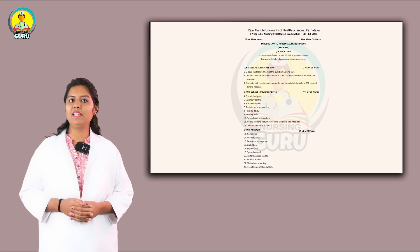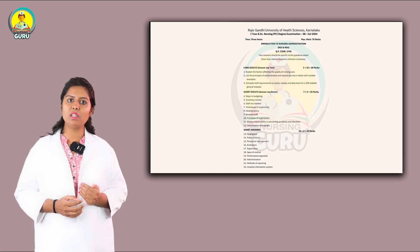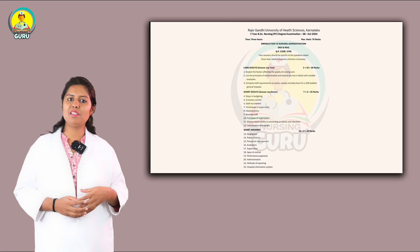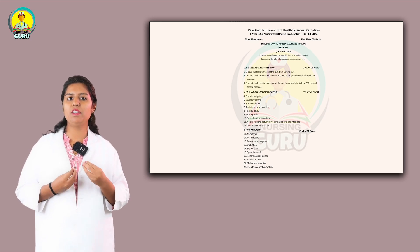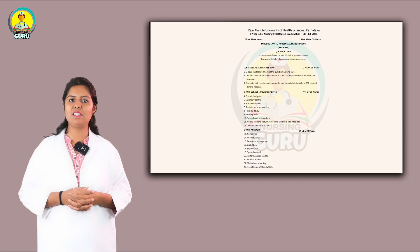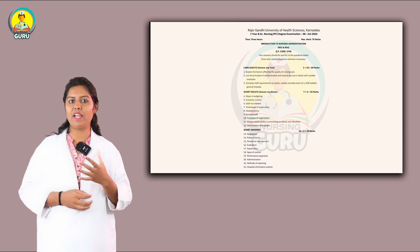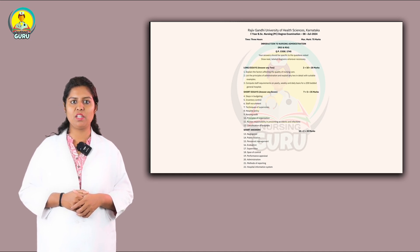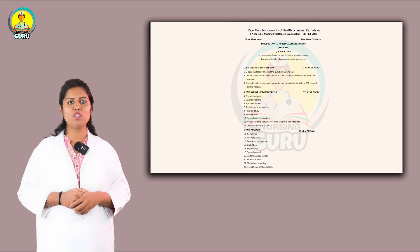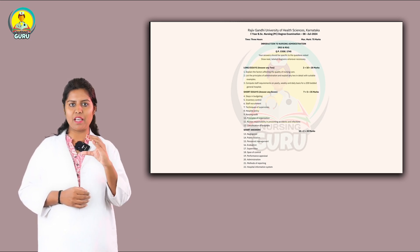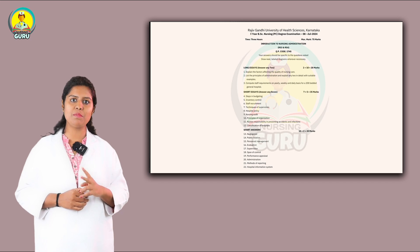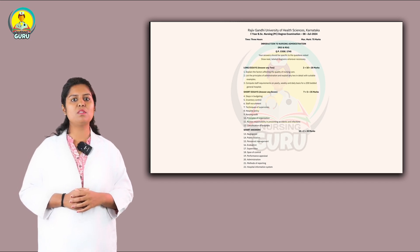For short answers, there are 10 questions and you must answer all — no options. But these are simple to answer; just write the definition, meaning, and whatever you know. The questions are: negligence, public relation, personal management, evaluation, supervision, span of control, performance appraisal, administration, methods of reporting, and hospital information system. For each, write at least one paragraph — six to seven lines or half a page is more than enough for 2 marks. Note that supervision appears twice in the same question paper, showing how important it is.